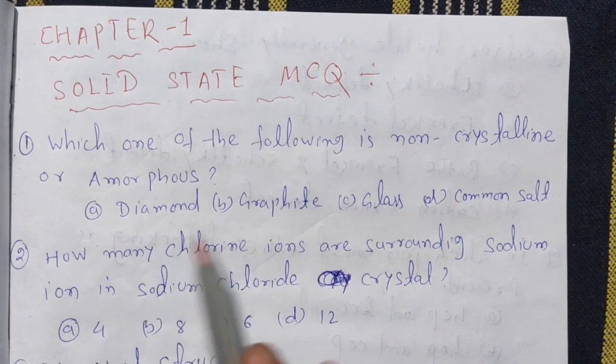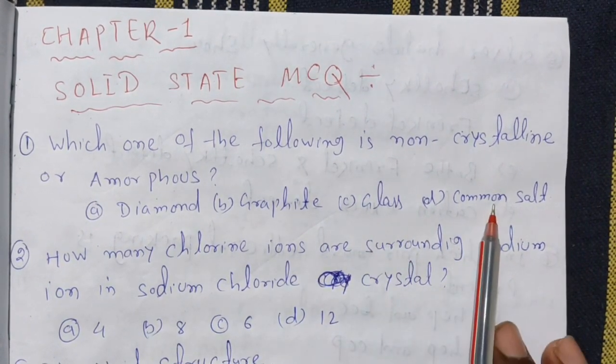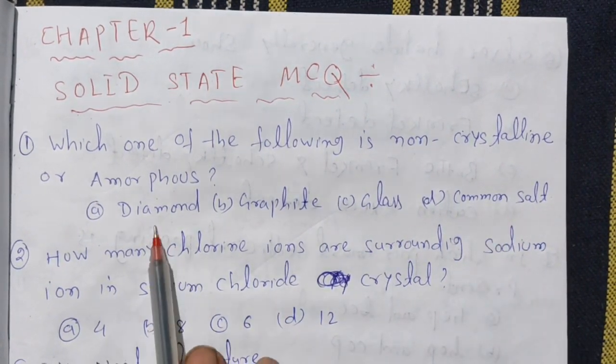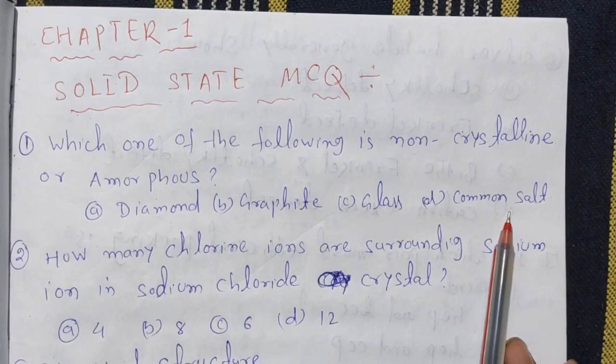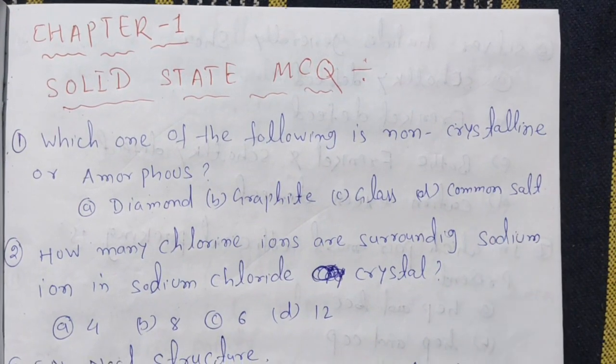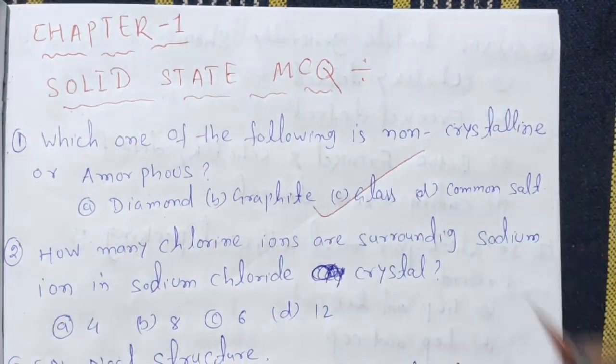Diamond, graphite, and glass are common solids. Diamond, graphite, and carbon are crystalline solids. Glass is an amorphous solid.